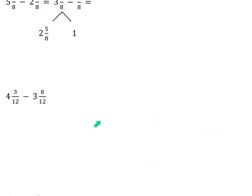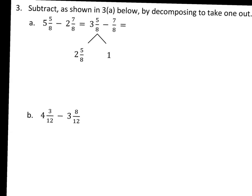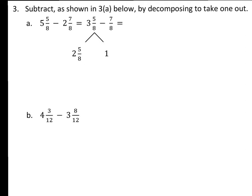Well, it's kind of hard for me to see this page here. There we go. Alright, subtract, as shown, by decomposing by taking 1 out. So, this is that strategy where you take out a whole. So, if you look at the example here, we have our problem. They went ahead and subtracted 5 minus 2 and got 3. They left the 5 eighths alone and they left the 7 eighths alone.